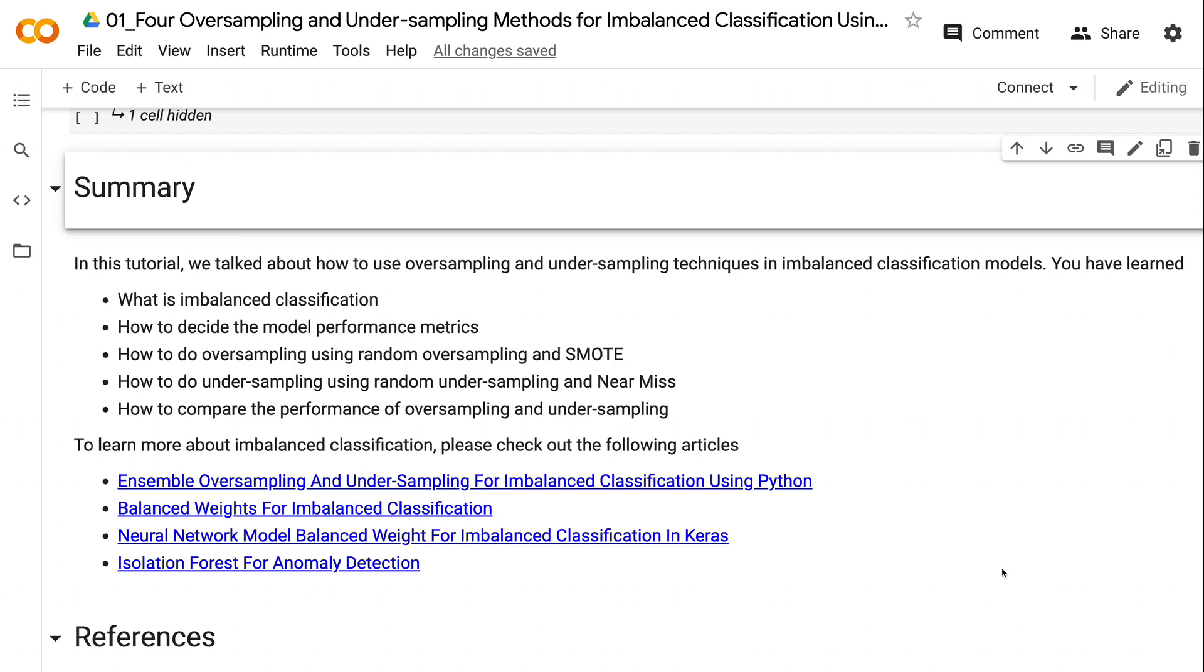We found that undersampling has better performance than oversampling. Within undersampling, near-miss algorithm has better performance than random undersampling.